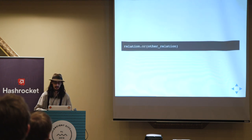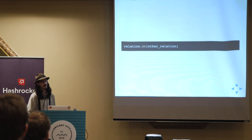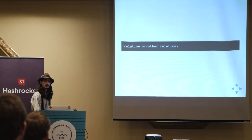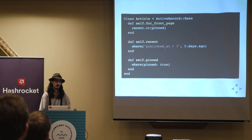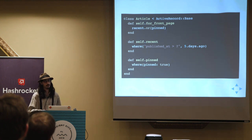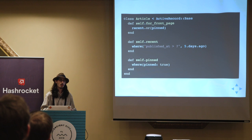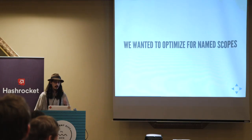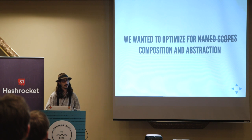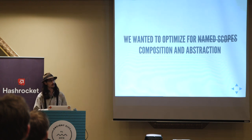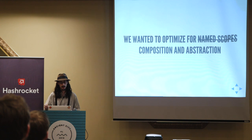This is what we ended up landing on — it's a method on relation that takes another relation as an argument. Here we've got a named scope called for_front_page: we're going to get recent articles or articles that have been pinned, and each of those has an individual named scope being reused in the for_front_page method. This was really what we were focusing on and why the API has exactly that signature — because we wanted to optimize for named scopes, or to put it another way, we wanted to optimize for composition and abstraction.